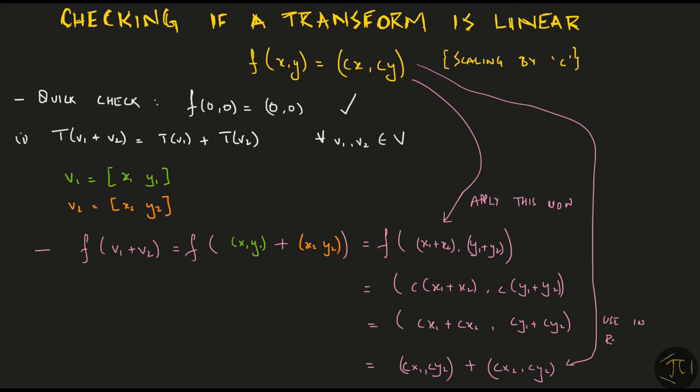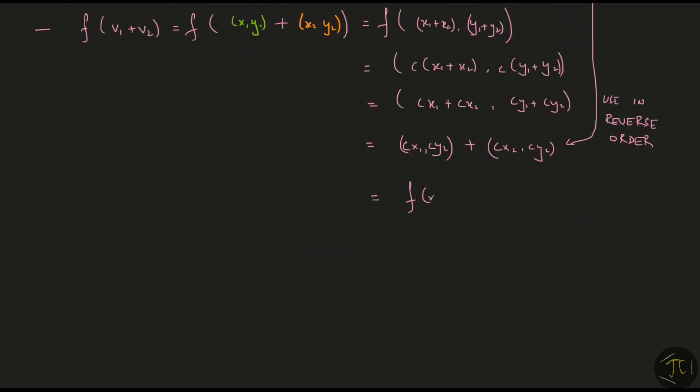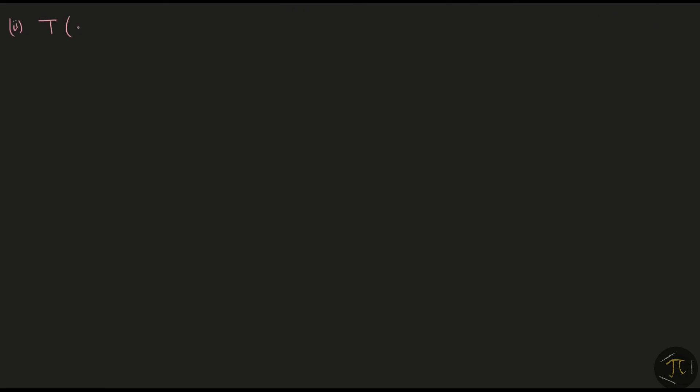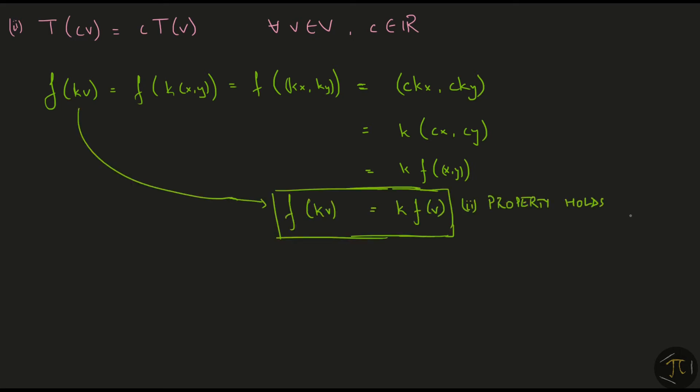Now using the definition of the transformation in the reverse order, we can write this as f(x1,y1) plus f(x2,y2) or as f(v1) plus f(v2), and we started with f(v1+v2). So this proves that the first property holds for all vectors in the input space. Now let's check for the second condition. Starting with f(k times v), substituting for v, performing scalar vector multiplication, then applying the definition of the transformation, pulling the scalar out and then reapplying the definition of the transformation, we reach the conclusion that this property holds as well. The given mapping f is indeed a linear transformation.